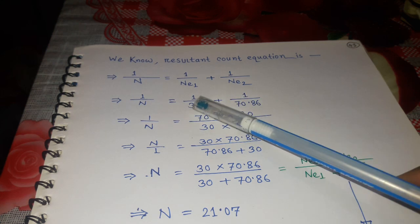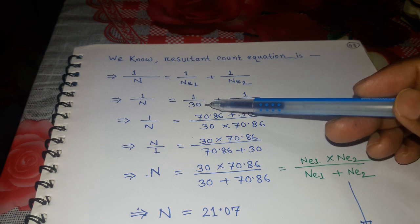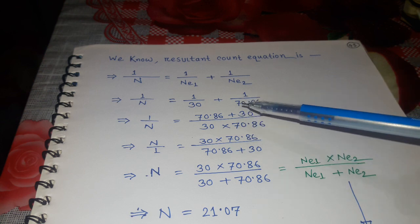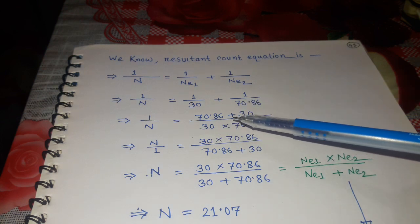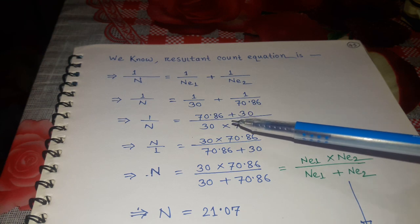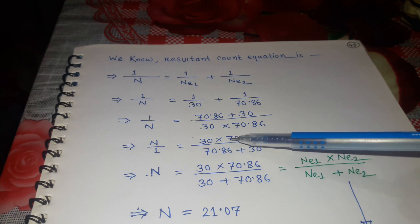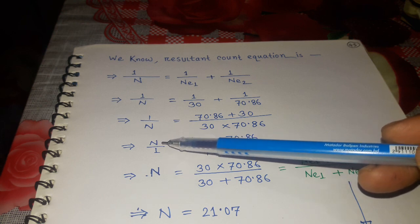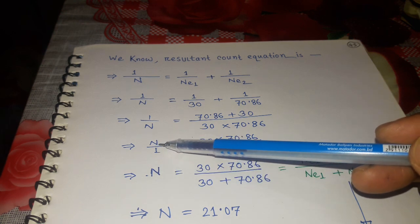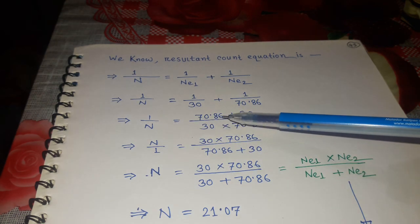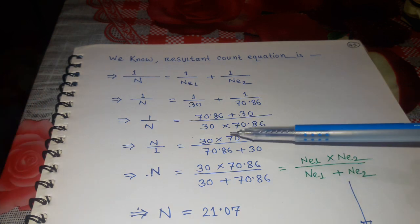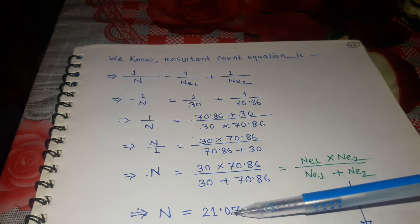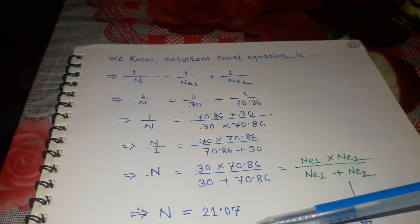So 1 by N equals 1 by 30 — here we put the value 30 single — plus 1 by 70.86, which is the 75 denier converted to cotton count. We calculate using this equation formula and get the reciprocal value. Taking the reciprocal of both sides, we get the resultant count N equal to 21.07, so N equals 21 single.